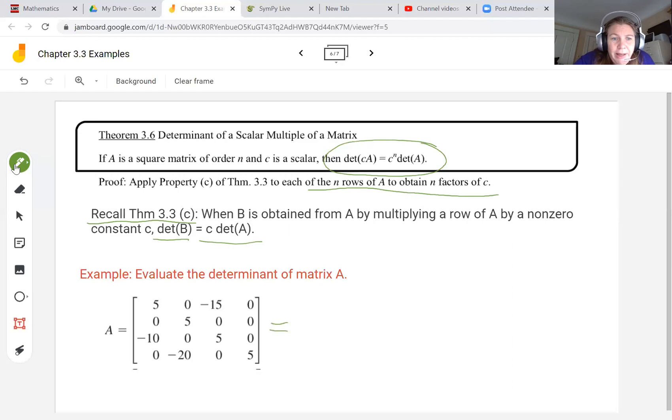This is going to be a 4 by 4 matrix. We've got the top row multiplied by 5, the second row multiplied by 5, the third row multiplied by 5, and the fourth row multiplied by 5. So this is 5 to the fourth multiplied by the determinant, which is 1, 0, negative 3.